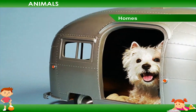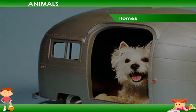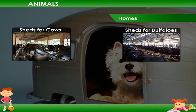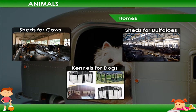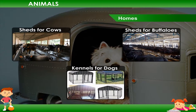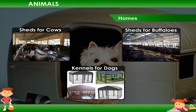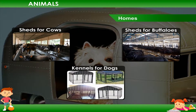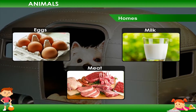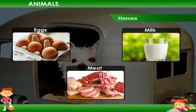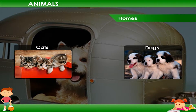Humans make homes for pet or domestic animals. We make sheds for cows and buffaloes. We make kennels for dogs. Animals are also useful to us. Domestic animals help humans in growing crops. They also give us eggs, milk, meat etc. Pet animals such as cats and dogs are our companions.